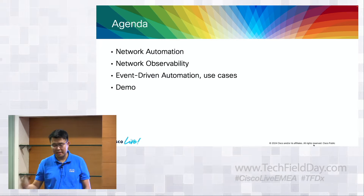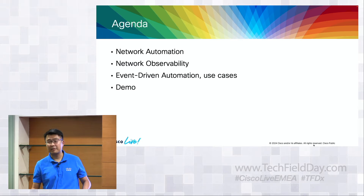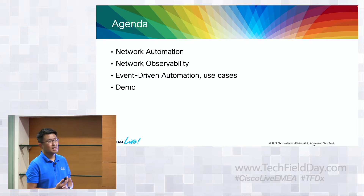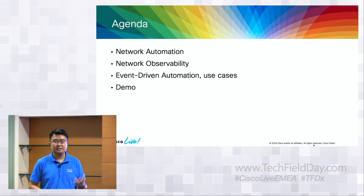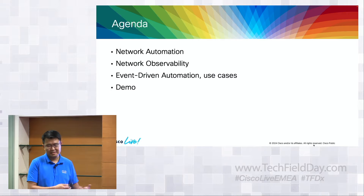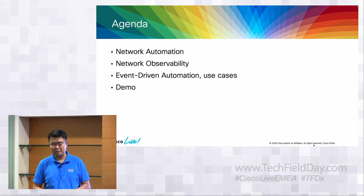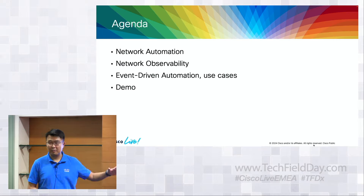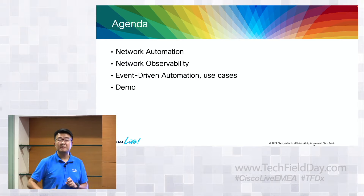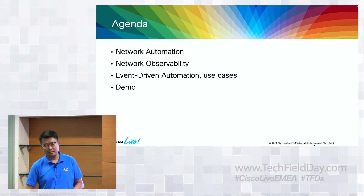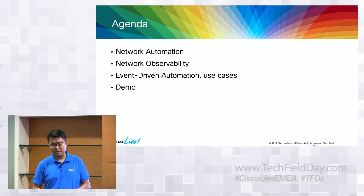We'll go through how customers want to monitor their fabric, which is network observability. Event-driven automation is essentially how to stitch these two parts together. We're also going to go through some demos and real user case demos to show you how to do that.